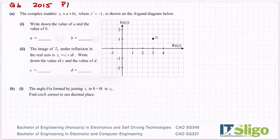Okay, question 6, 2015 paper 1. The complex number z1 is equal to a plus bi where i squared is minus 1 is shown in the Argand diagram below. Write down the value of a and the value of b.